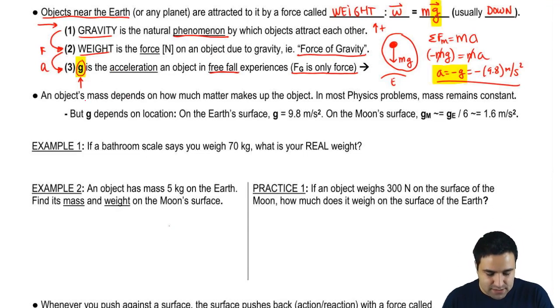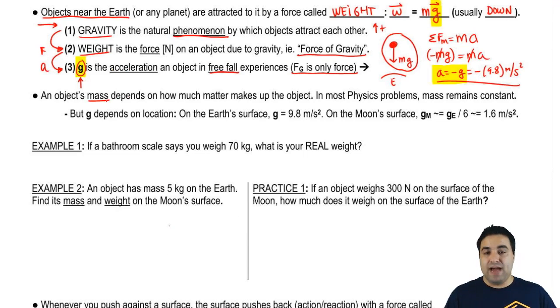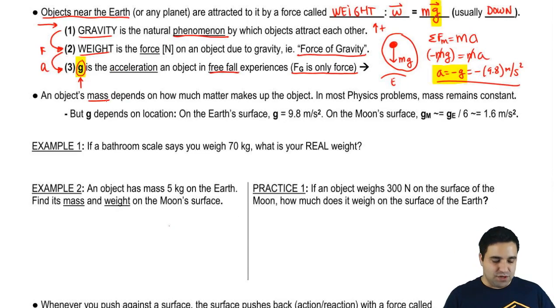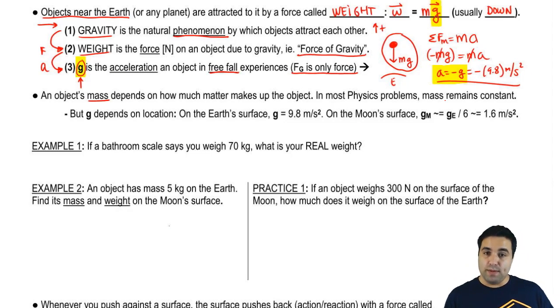An object's mass depends on how much matter makes up the object — that's the definition of mass, how many little atoms you have. In most physics problems, mass will remain constant.